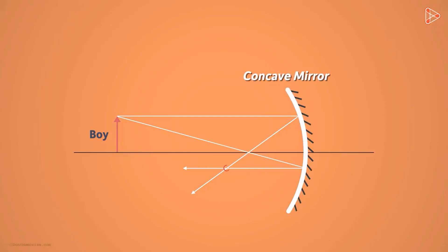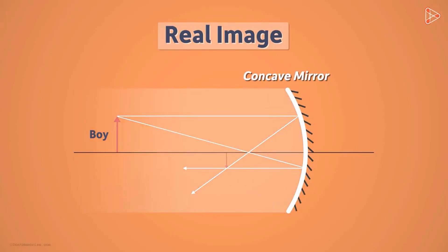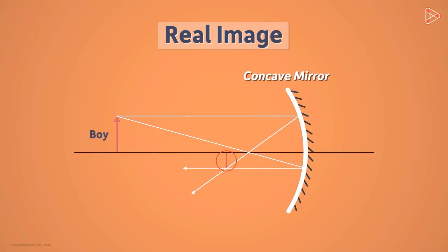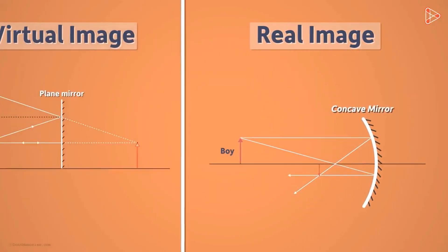We can do the same for the remaining points of the object to get the complete image. This is called a real image — it is the image formed when light rays converge after reflection from the surface. Real images formed by concave mirrors are always inverted. The image is formed on the same side of the mirror as the object. Real images are always formed on the same side as the object, and light rays do actually reach this position. We will learn more about real images formed by concave mirrors in future videos.